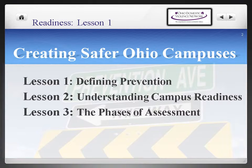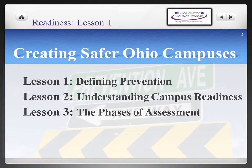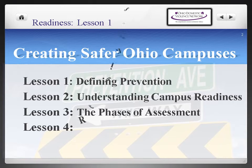In lesson three you'll learn about the strategic prevention planning, which includes assessment, planning, implementation, evaluation, and sustainability. Also in lesson three we'll cover the nine levels of readiness more in depth so that you can begin to recognize where your campus might fall on the readiness spectrum.